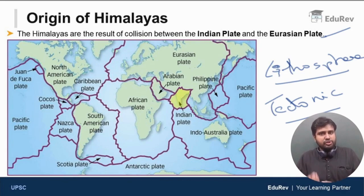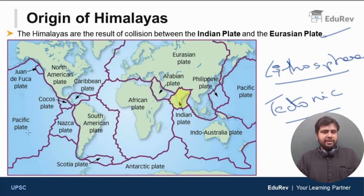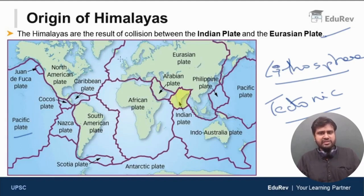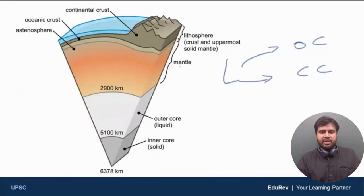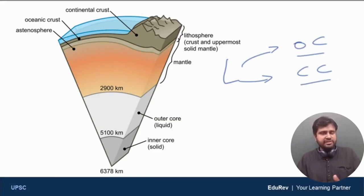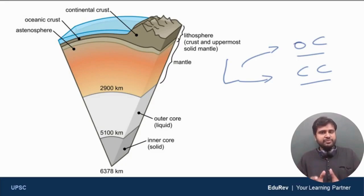Some tectonic plates have only continental crust, some are purely oceanic crust, and some have both. For example, the Pacific plate is purely oceanic crust. The Eurasian plate is mostly continental crust, though it also has some parts which are oceanic. Continental crust is where you have the continents or the landmass; oceanic crust is where you have the ocean, and underneath the ocean we have the ocean floor — that is the oceanic crust.